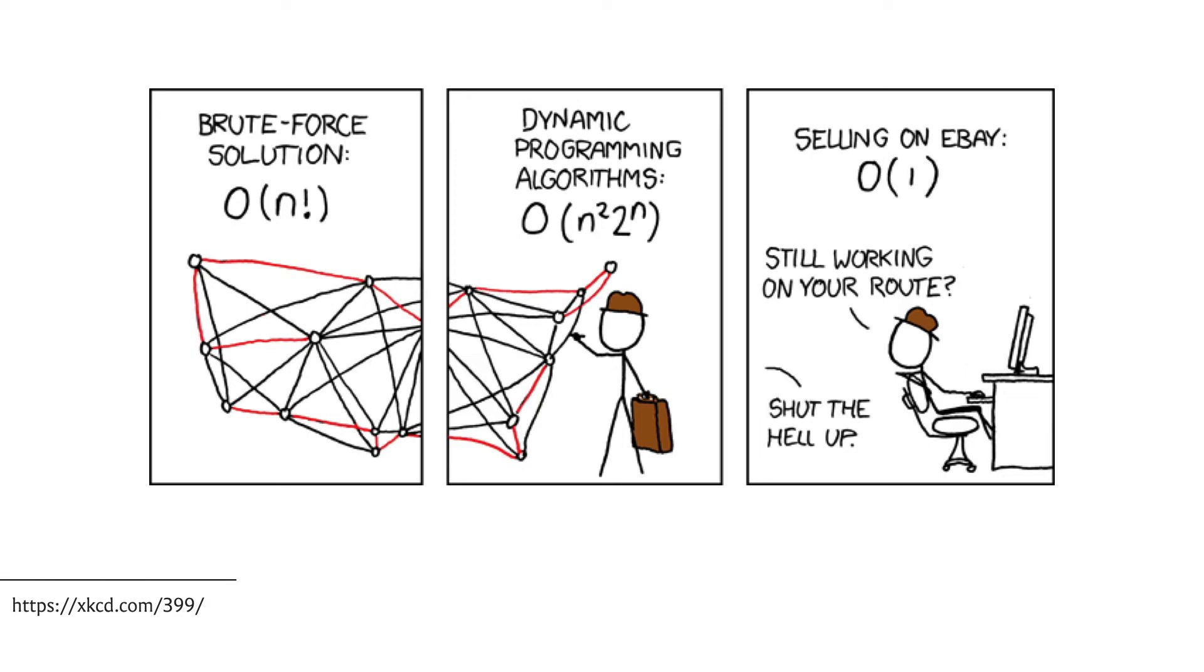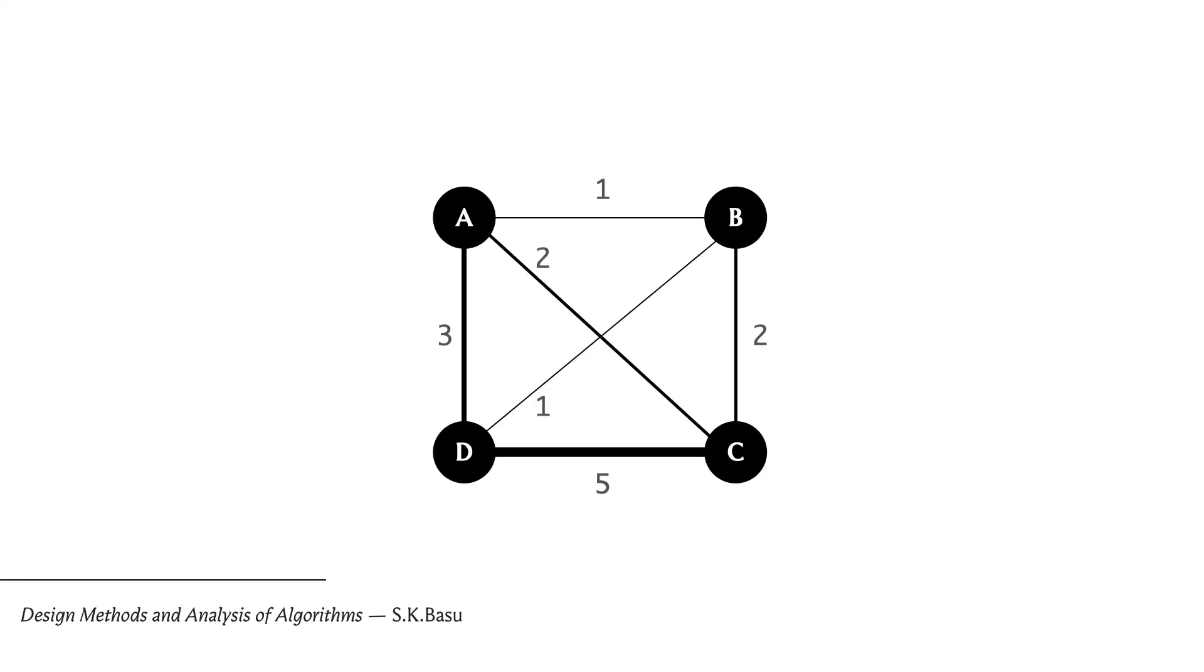Here is a specific example from the book Design Methods and Analysis of Algorithms. Let's run through what happens if we apply the greedy algorithm with origin city being the top left, city labeled a. From a, the most accessible city is b at cost one.